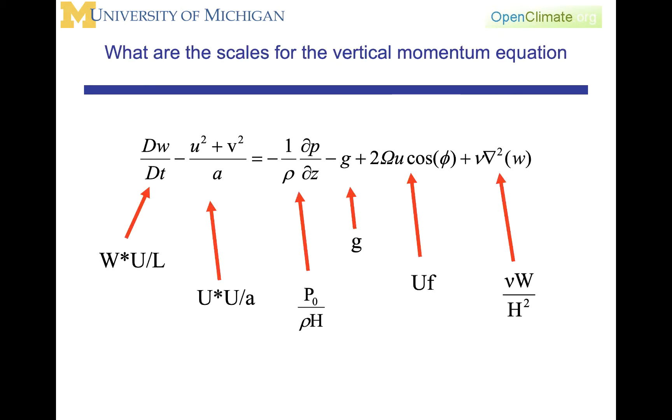We're going to use the same procedure. We are going to estimate the acceleration term, the d by dt term, with w, the scale factor for the vertical wind, and then u and L are going to be representative of the time derivative, which in this case, u over L is the reciprocal of the time scale factor and has units of per second.